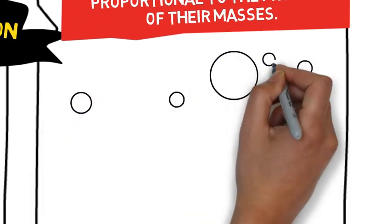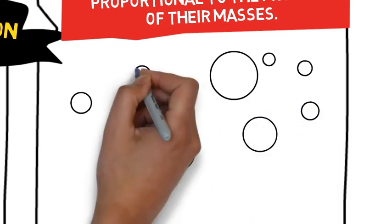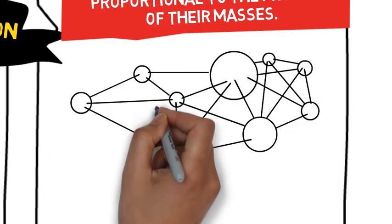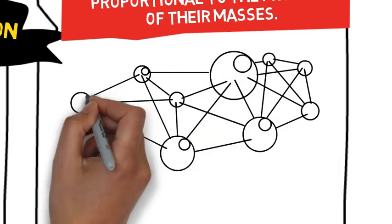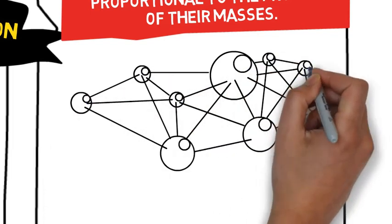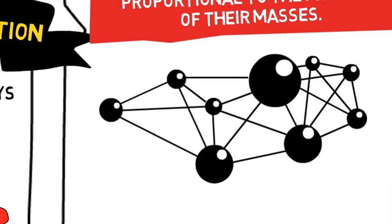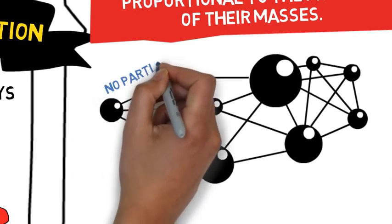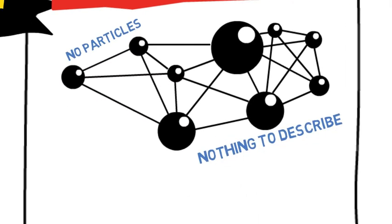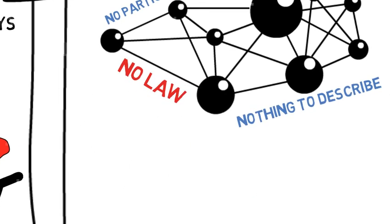So the law of gravity describes how the particles of the universe attract each other. If there were no particles, would gravity exist? No. How could it? There would be no particles attracting. There would be nothing to describe and so the law would not exist.